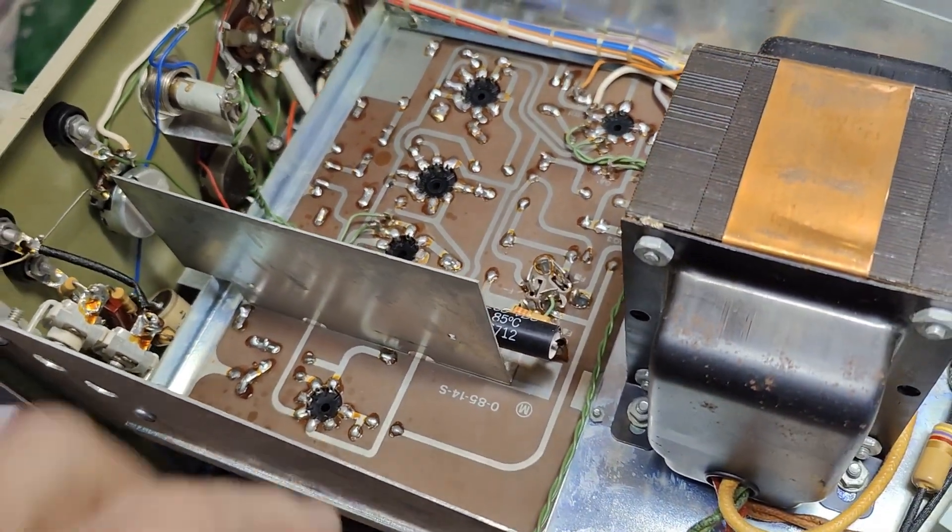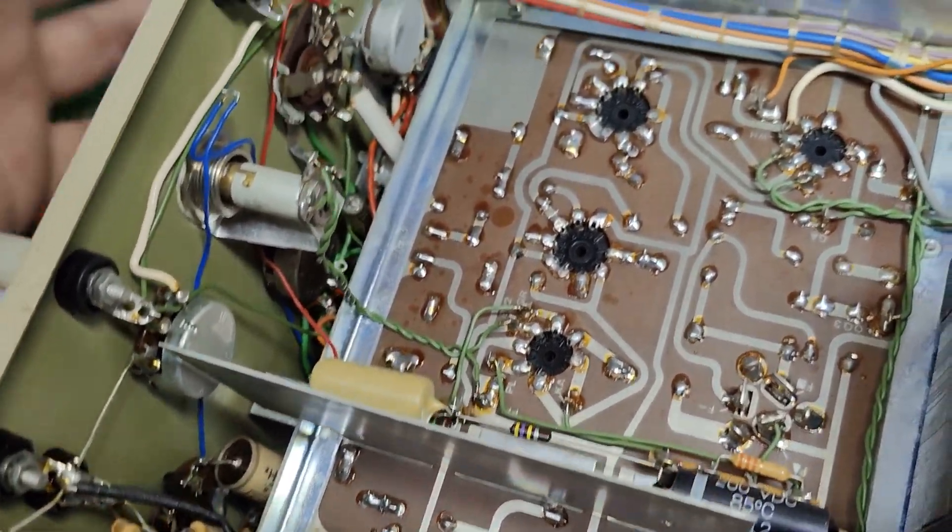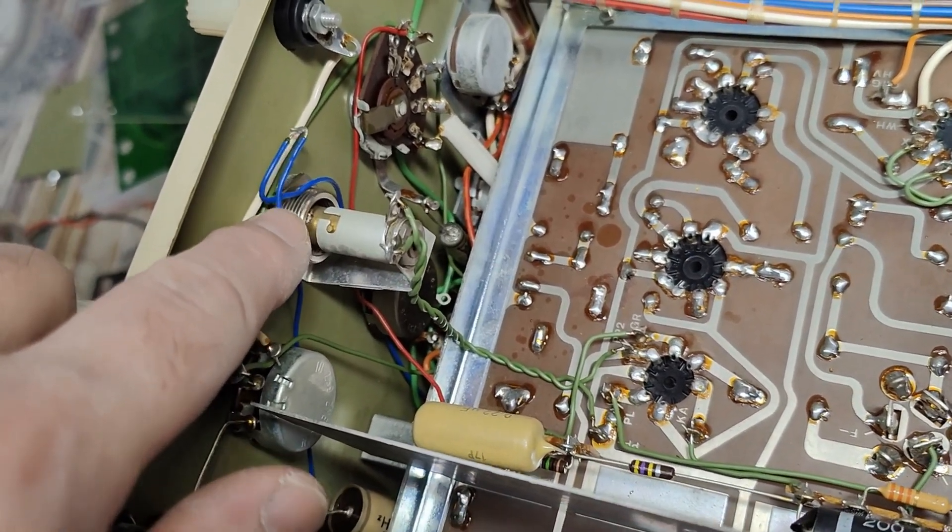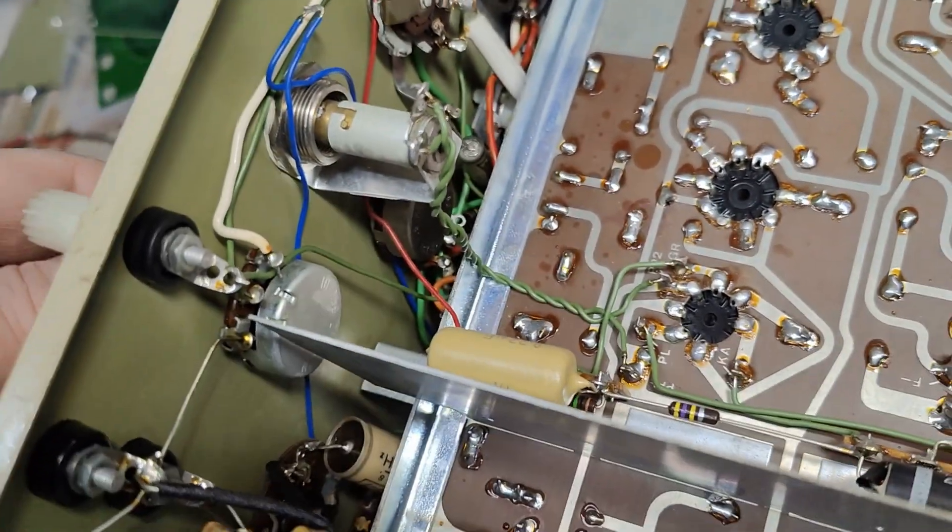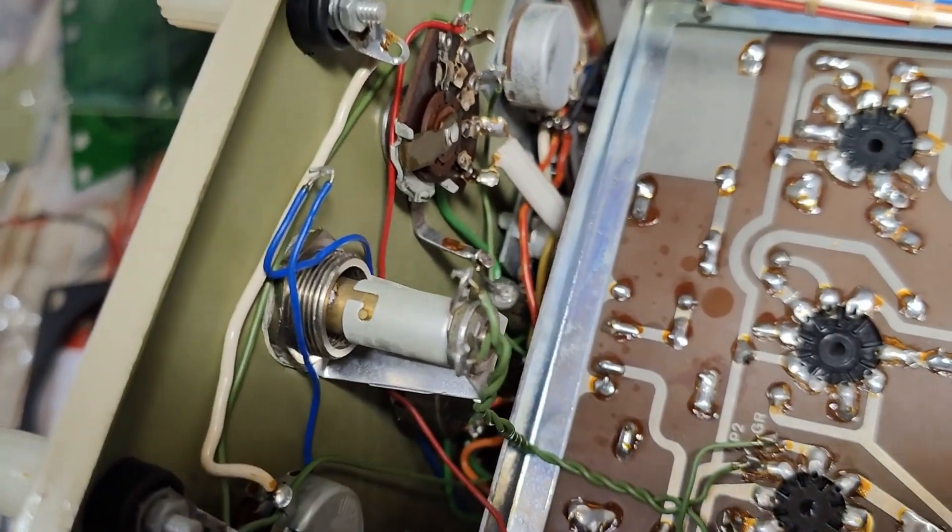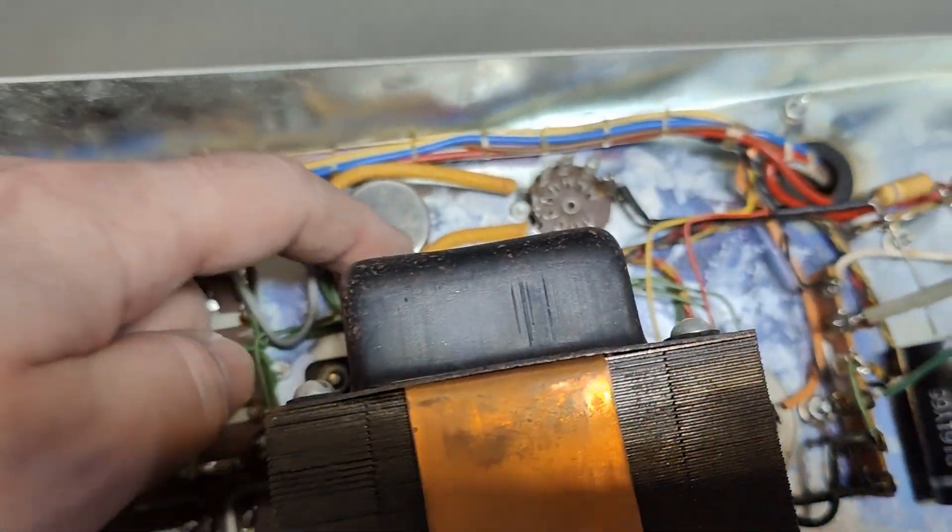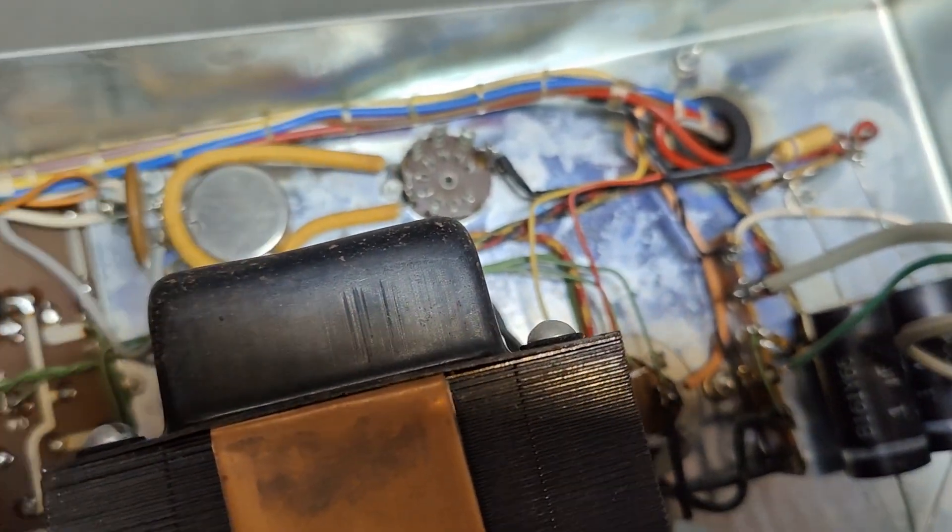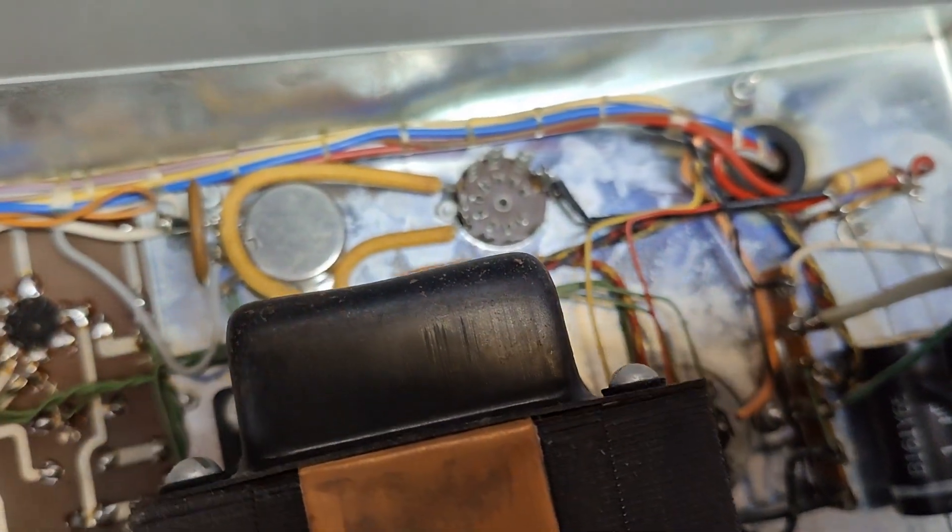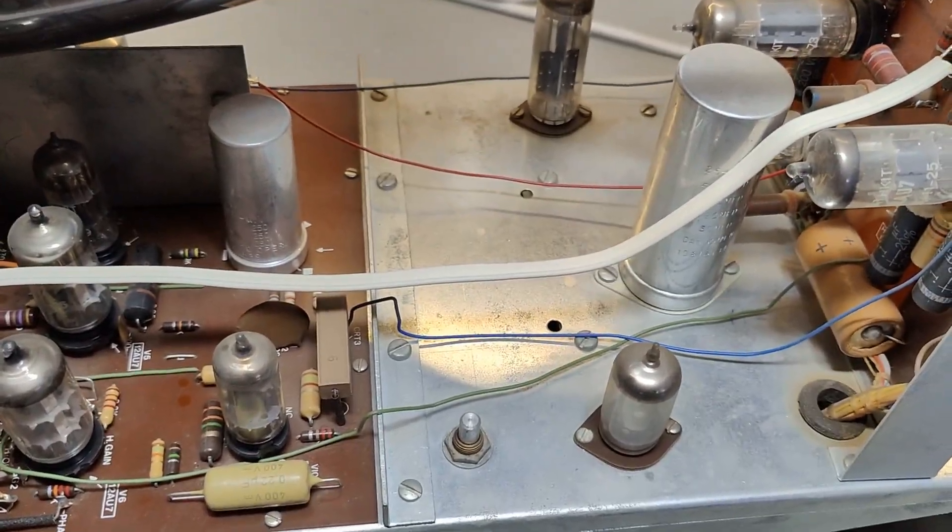That's the input for the vertical. This is input for the horizontal. There's a funny modification here with two blue wires soldered together. I don't know what the idea is here. It's probably not supposed to touch the metal. That will be low voltage for the voltage regulator tube.